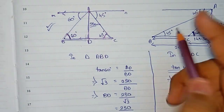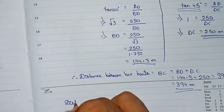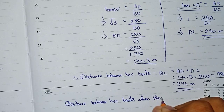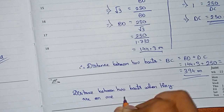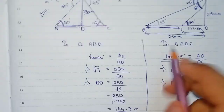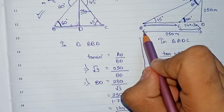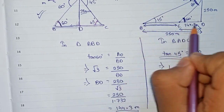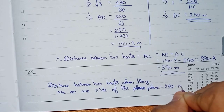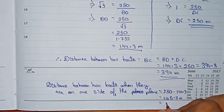We need to calculate the distance between the two boats B and C in this configuration. The distance BC equals the full distance minus the smaller portion, that is 250 minus 144.3, which equals 105.7 meters. Since we need the nearest whole number, the answer is 106 meters.